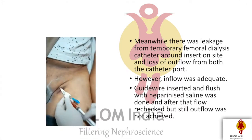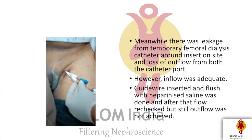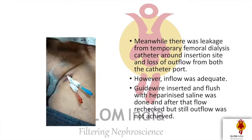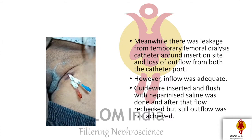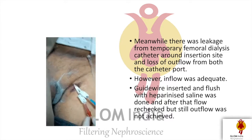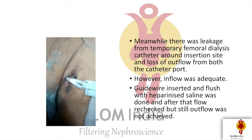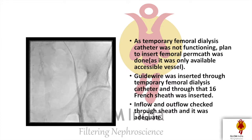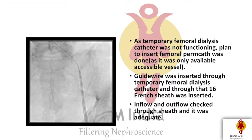Inflow was still adequate. To salvage the catheter, a guide wire was inserted to remove the clot, and flushing with heparinized saline and bicarbonate was done. After that, flow was checked but outflow was still not achieved. As the temporary femoral dialysis catheter was not functioning well, the plan was to insert a femoral tunneled catheter. A guide wire was inserted through the temporary catheter, a 16 French sheath was inserted through it, and inflow and outflow were checked — which were adequate.